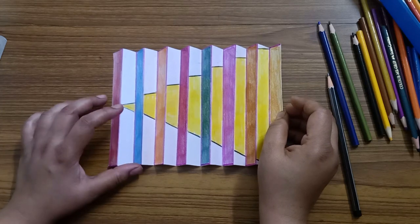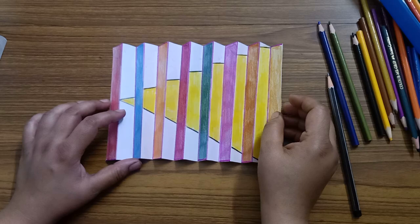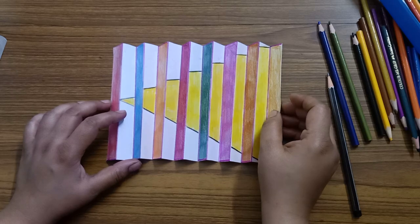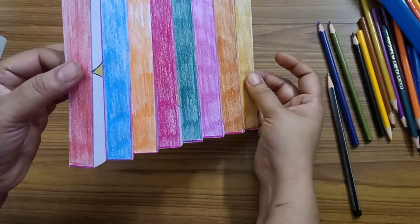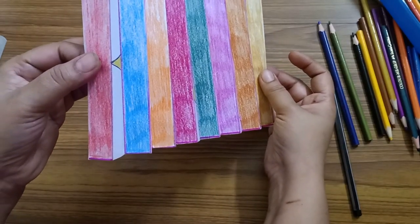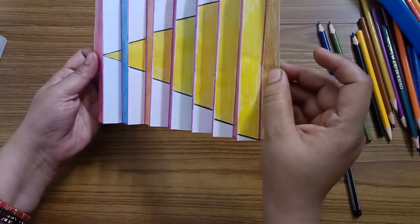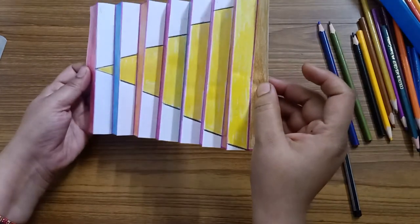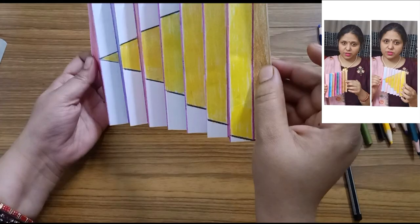To triangle you can use any other geometrical shape square rectangle diamond and it will look very interesting when you look at it from different angle. When you change the angle the picture changes. I hope you have enjoyed making this easy and interesting math project. See you later bye bye.